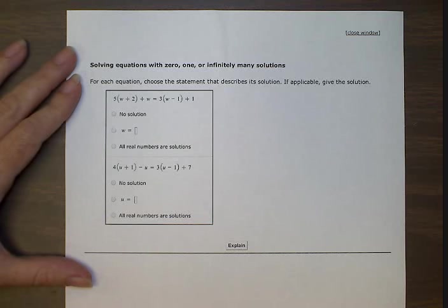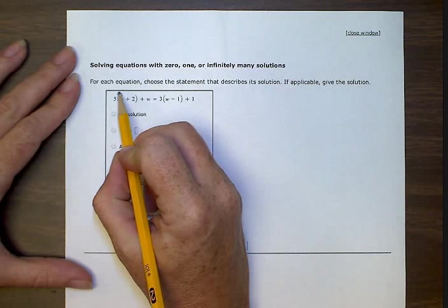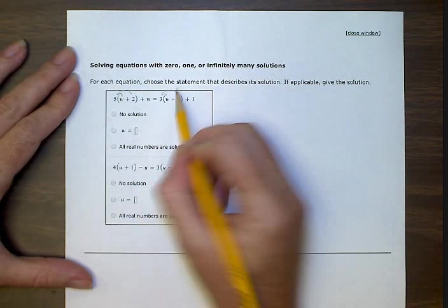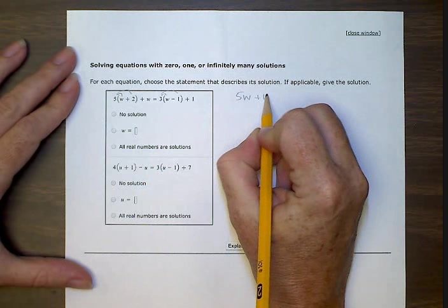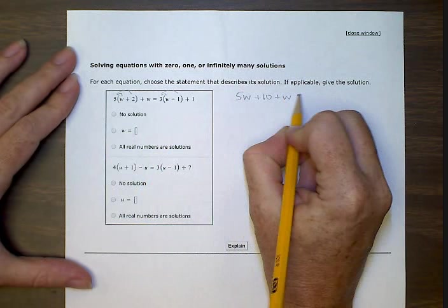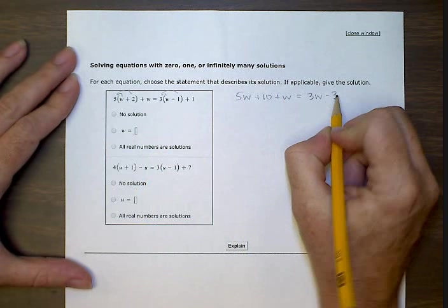The first one says five times (w plus two) plus w equals three times (w minus one) plus one. So we're going to first distribute across the parentheses, and I'm going to rewrite it as 5w + 10 + w = 3w - 3 + 1.